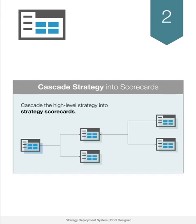For example, you can cascade a strategy according to the organizational structure. In this case, each department or business unit will have its own strategy scorecard focused on their specific challenges. On our platform, you can use the created hierarchy of scorecards to distribute roles and responsibilities among team members.